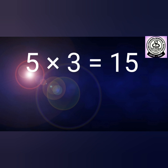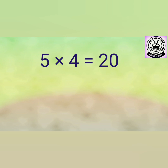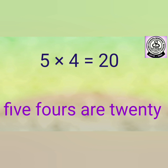Five threes are fifteen. Let's say slowly — five threes are fifteen. Five threes are fifteen. Five fours are twenty. Five fours are twenty. Don't say it incorrectly — five fours are twenty.